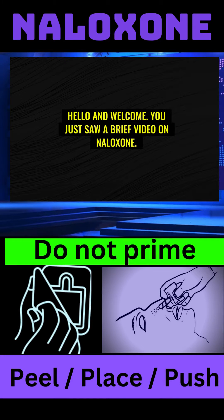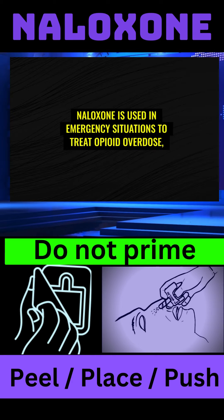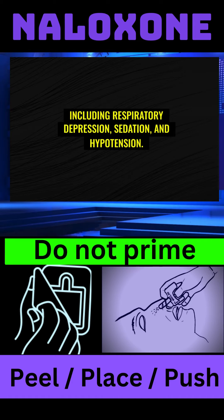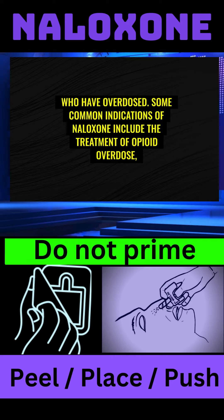Hello and welcome. You just saw a brief video on Naloxone. Today, we'll be talking about Naloxone, a medication used to reverse the effects of opioids. Naloxone is used in emergency situations to treat opioid overdose, including respiratory depression, sedation, and hypotension. It's a life-saving medication that can quickly reverse the effects of opioids in people who have overdosed.